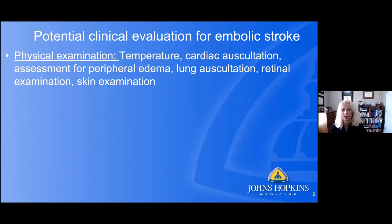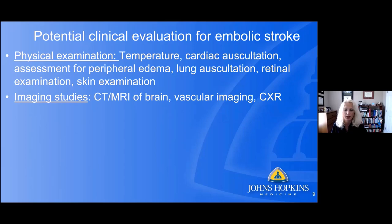How do you evaluate a patient for embolic stroke? Physical examination is first: assess temperature — is the patient febrile? — cardiac auscultation, listen to the heart and lungs, assess for peripheral edema, perform a retinal examination and a skin examination. You want to look for the possibility of an embolic shower — meaning it not only went to the brain but also involved the eye and possibly the skin. Imaging includes CT or MRI of the brain, with MRI preferred for more structural detail, vascular imaging of the head and neck vessels, and a chest x-ray to look for malignancy or pulmonary infiltrate.